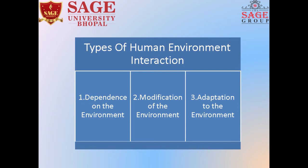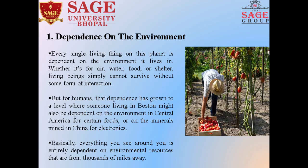First, dependence on the environment. It means every single living thing on this planet is entirely dependent on the environment. Whether they live in Boston or Central America, they are totally dependent on the environment — whether it is for air, water, food or shelter. Living beings simply cannot survive without some form of environmental influence. For example, someone living in Boston might be dependent on the environment in Central America or on a mine in China for certain products. Basically, everything you see around you is entirely dependent on environment processes.